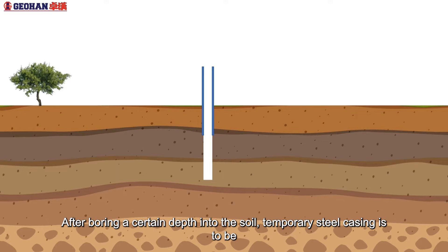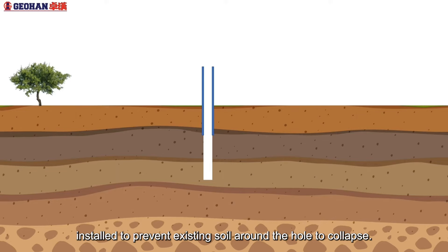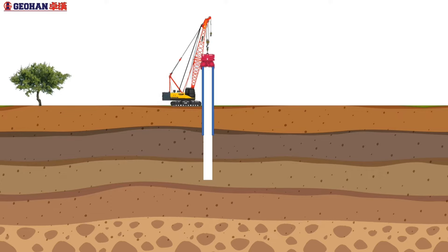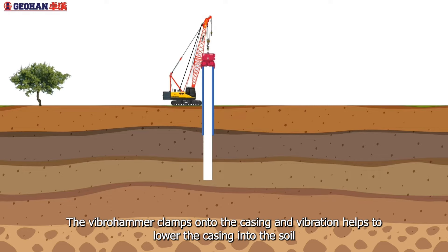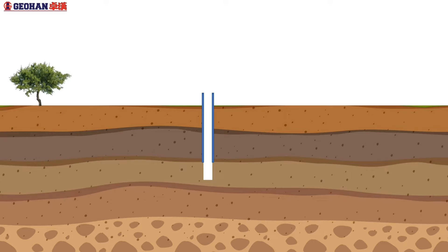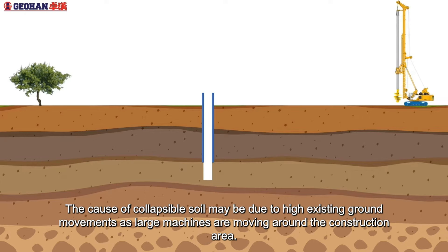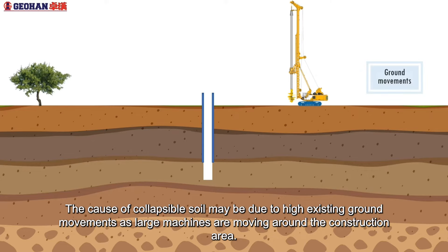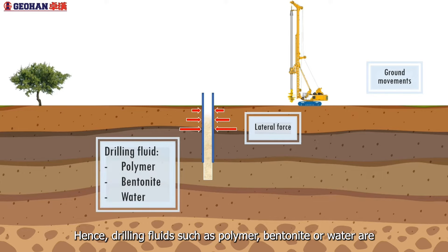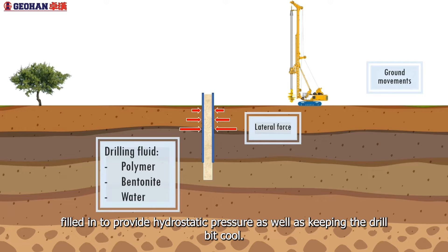After boring a certain depth into the soil, a temporary steel casing is to be installed to prevent existing soil around the hole from collapsing. The casing installation requires a vibro-hammer which is hung by a crawler crane. The vibro-hammer clamps onto the casing and vibration helps to lower the casing into the soil, because it reduces the friction between the casing and the ground. The cause of collapsible soil may be due to high existing ground movements as large machines are moving around the construction area. Also, lateral force of soil tends to push towards the borehole. Hence, drilling fluids such as polymer, bentonite or water are filled in to provide hydrostatic pressure as well as keeping the drill bit cool.